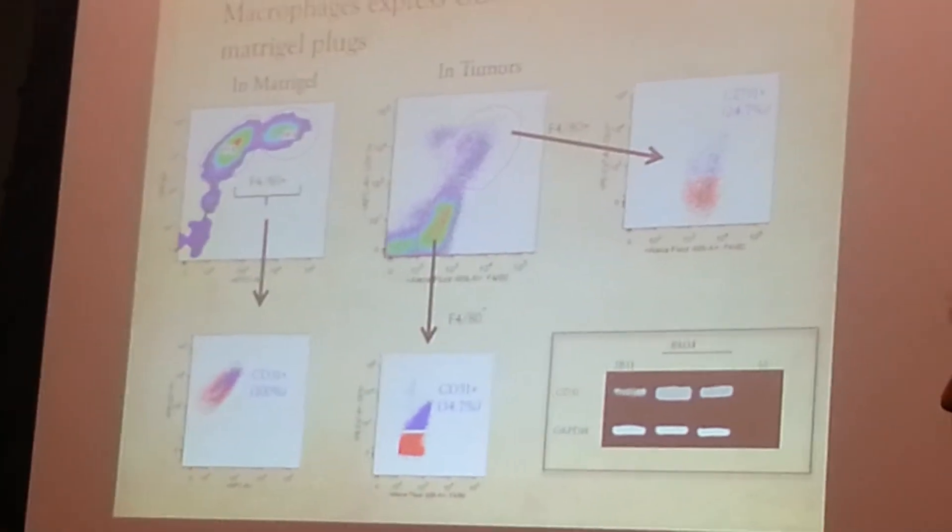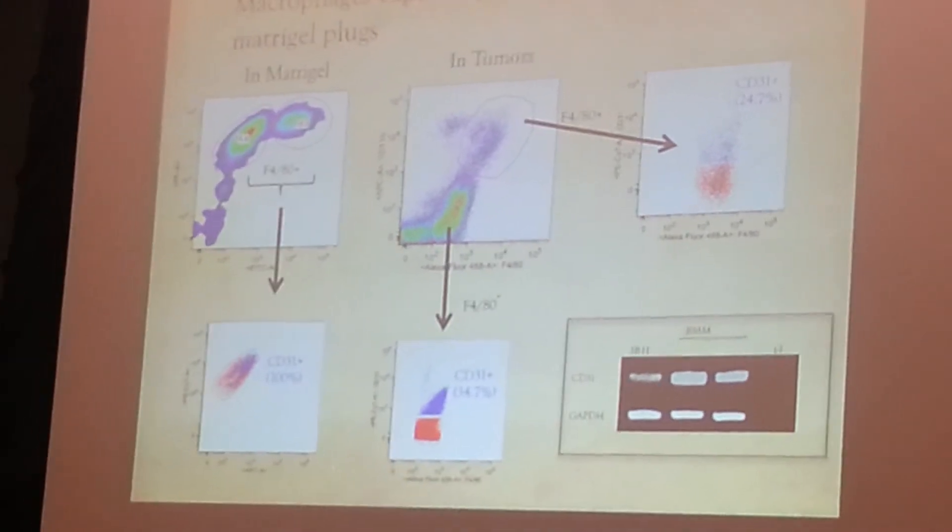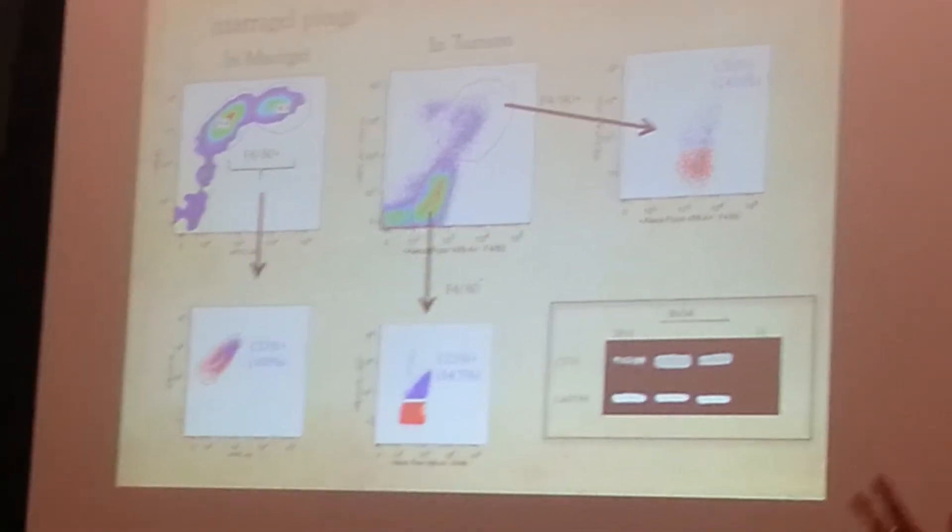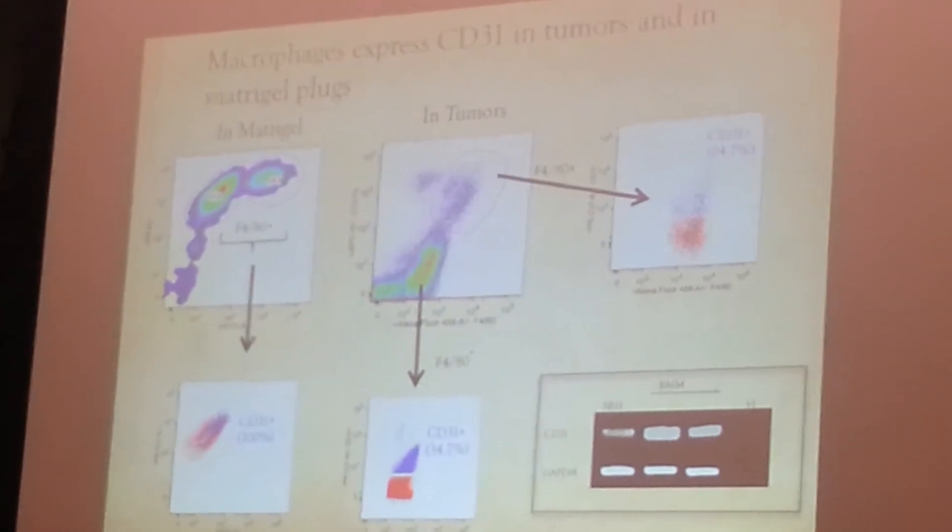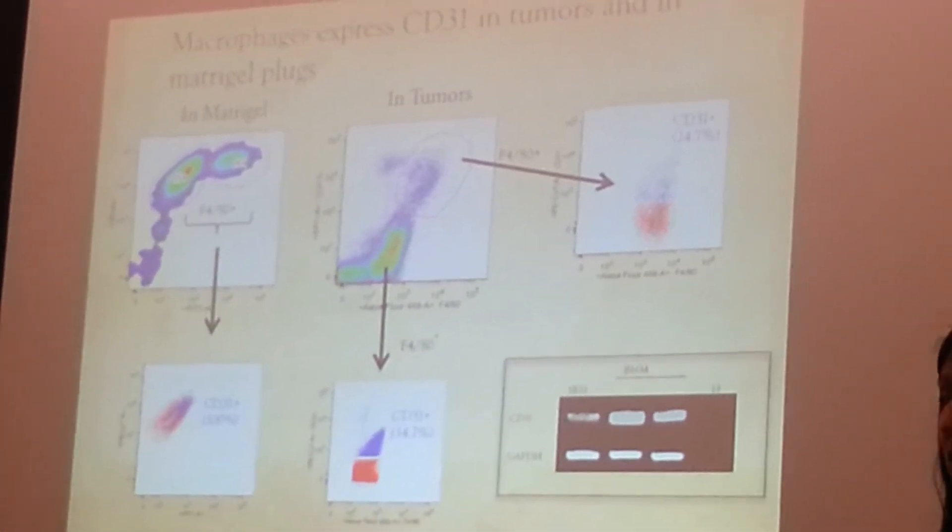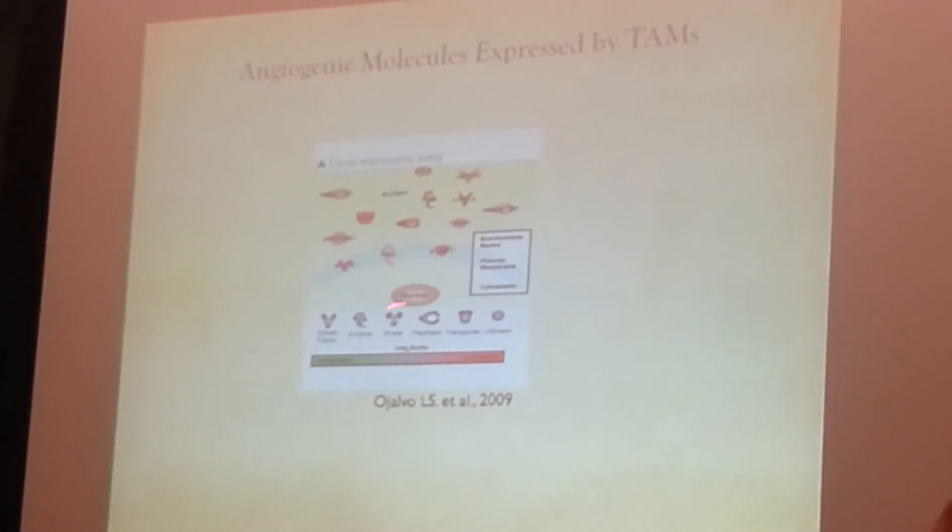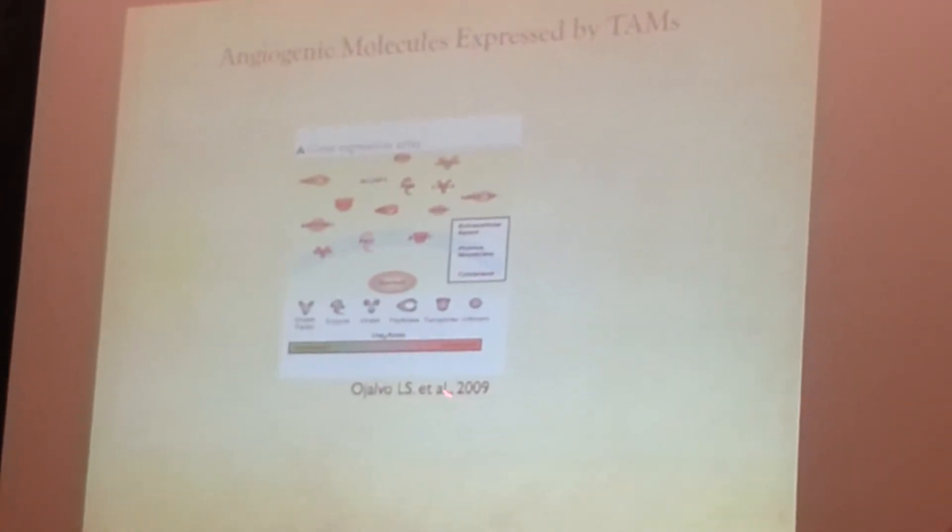Going more into mechanism, we were wondering what kind of molecules macrophages can be using to increase angiogenesis. In this paper, this work I've already did,